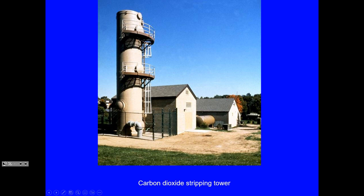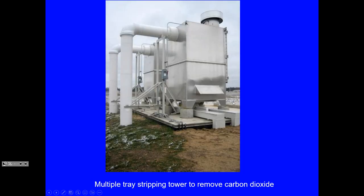Here's a photo of a carbon dioxide stripping tower where they would be doing softening, simply to reduce the amount of lime being consumed. Building this air stripping tower allows them to remove the majority of the carbon dioxide before the lime is added. Here's another one — you can see the vent where the air goes up, and on the inside would be a fan drawing air through the inlet and blowing it upward.